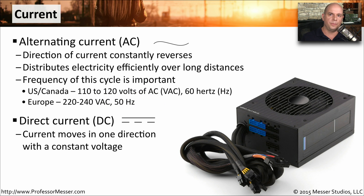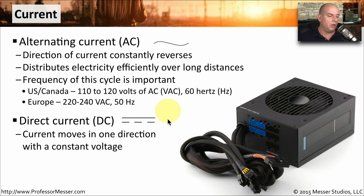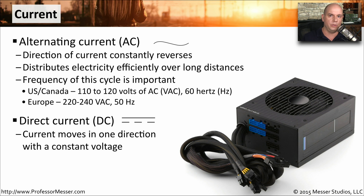The power supplies inside of our computers take this alternating current from our wall outlets and convert it into direct current, or DC. You'll sometimes see direct current abbreviated or shown with a long line at the top and smaller lines on the bottom. With DC, your current is always going to move in one direction with a constant voltage.